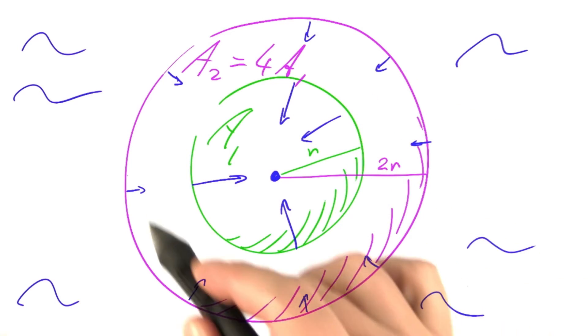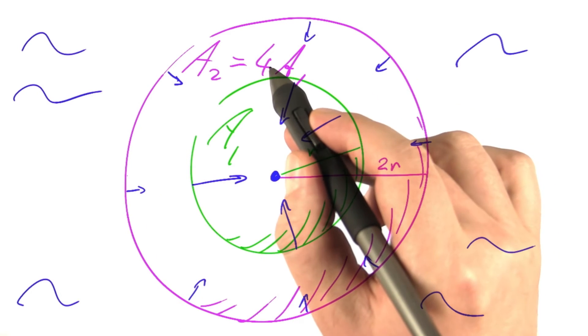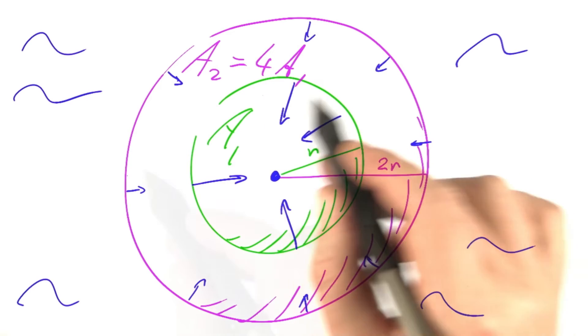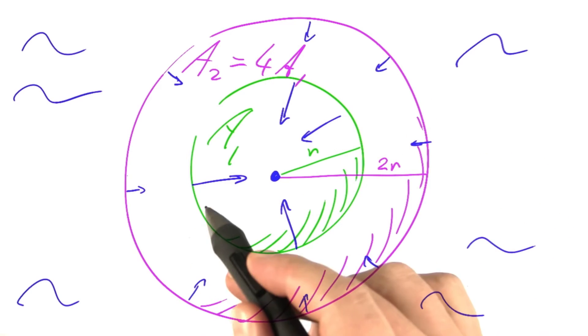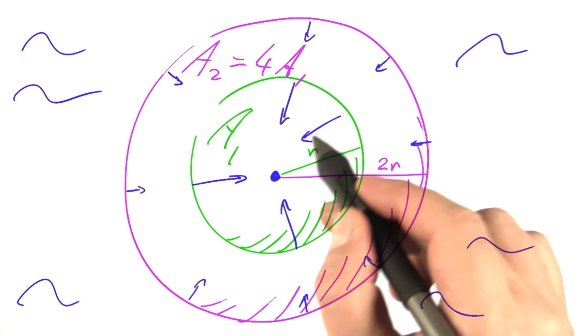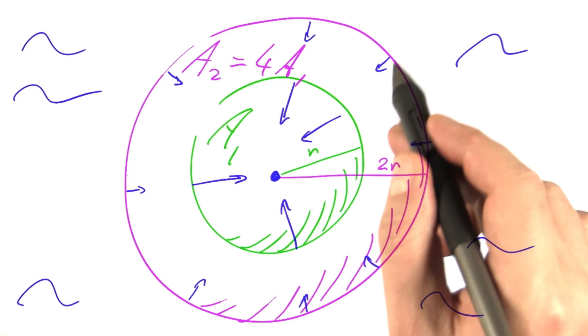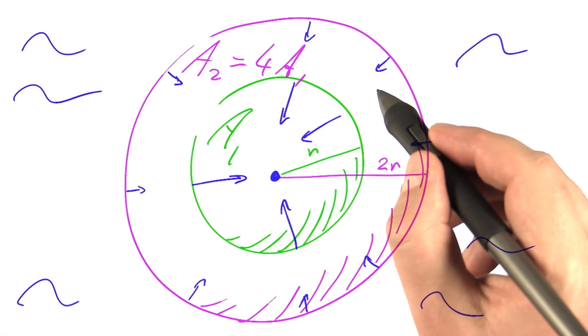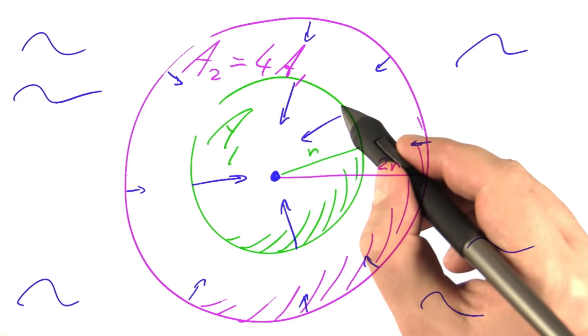But as the outer sphere has a surface area four times that of the inner sphere, the velocity has to go up. To transport the same amount of water per second through each of these spheres, the velocity at the inner sphere has to quadruple compared to the velocity at the outer sphere. This is precisely what we saw before with gravity. As we double the distance, the force shrinks to one quarter of the original.